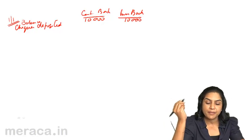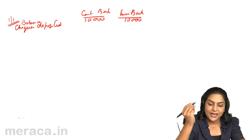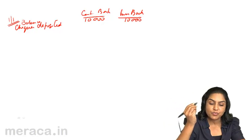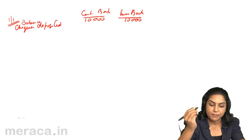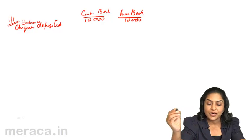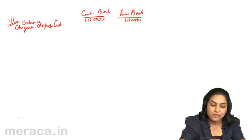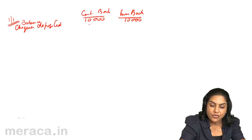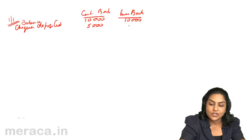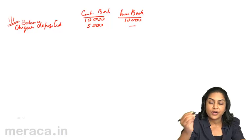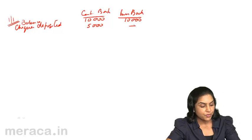Cheques worth 5,000 were deposited on the 1st and they were cleared on the 6th. So on the 1st, the deposit is recorded in the cashbook but there is no recording in the passbook yet.